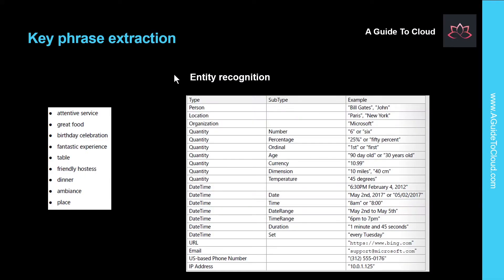So what is key phrase extraction? Key phrase extraction is the concept of evaluating the text of a document or documents and identifying the main points around the context of those documents. Consider the restaurant scenario discussed previously — depending on the volume of surveys collected, it can take a long time to read through all the reviews. Instead, you can use the key phrase extraction capability of the text analysis service and let the AI algorithm do the work for you.